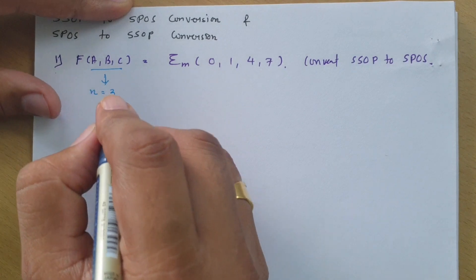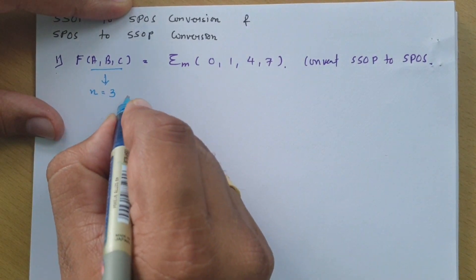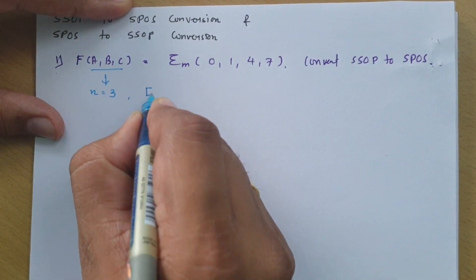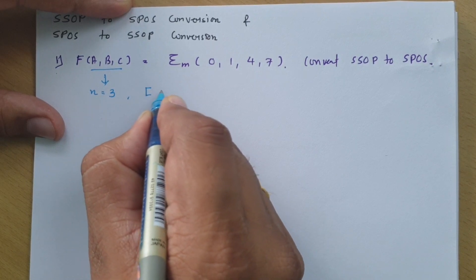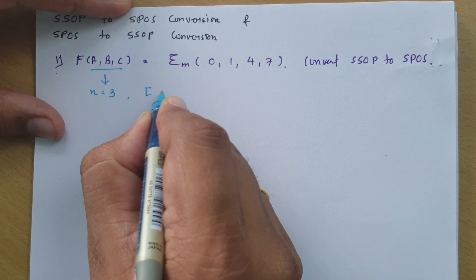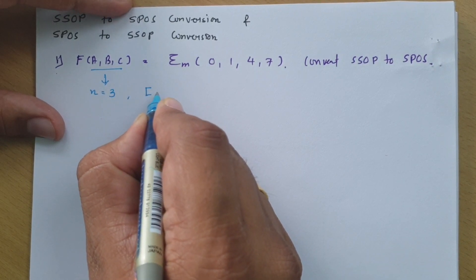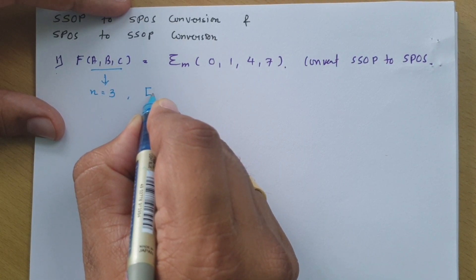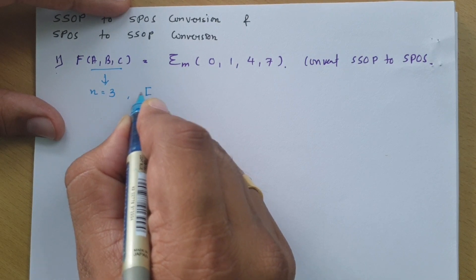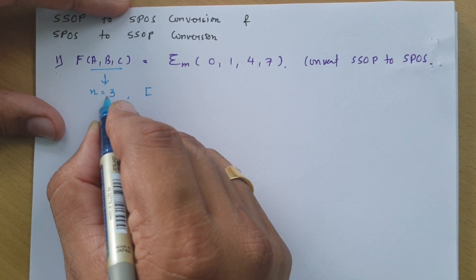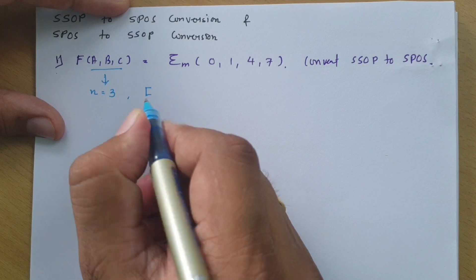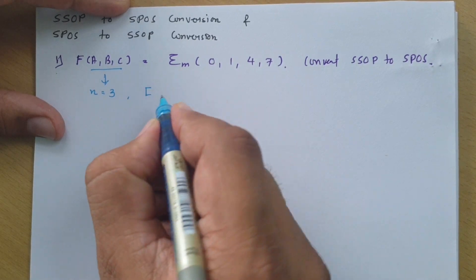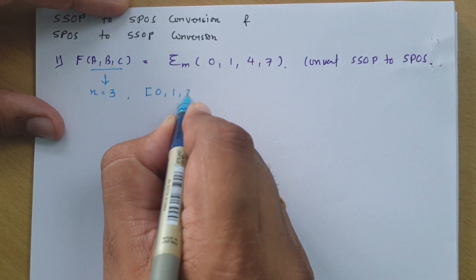As n equals 3, total possibilities of terms range from 0 to 7, as per total number of terms equals 2 to the power n, which is 2 to the power 3 equals 8. So total terms range from 0 to 7.